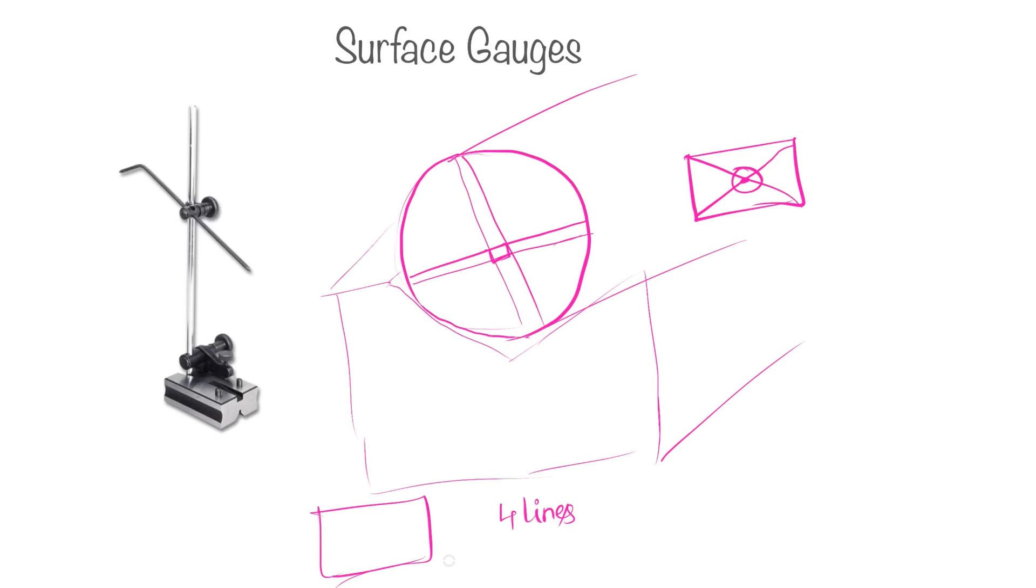Now we have to join the diagonals and we will get a center point. This will be the center line for this cylindrical object. So this is a little bit about surface gauge working principle. Thanks for watching. If you like this video, please subscribe to our channel.